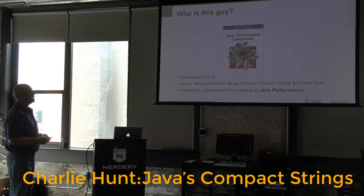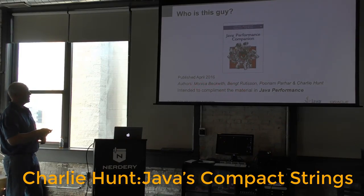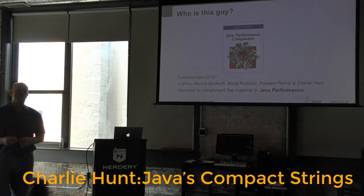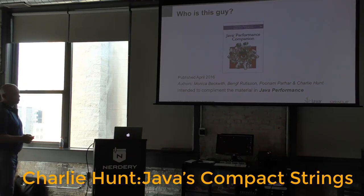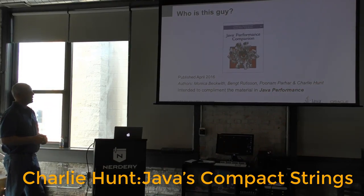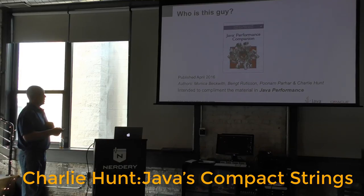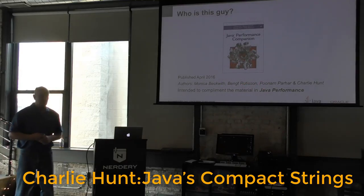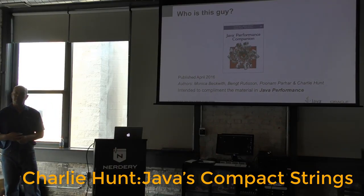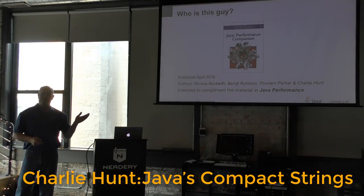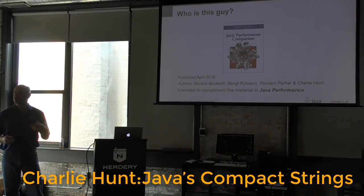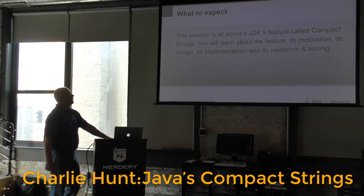A couple of years ago, myself, Monica Beckwith, Ben Trudison, and Clunam collaborated to write the Java Performance Companion. Monica and I worked together on the performance team for a long time, and I started the initial performance work on the G1 garbage collector. The book's intention was to provide complementary material to the initial Java Performance book, and it's a great reference if you're using G1 GC.